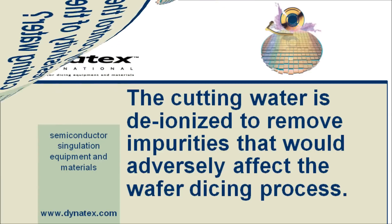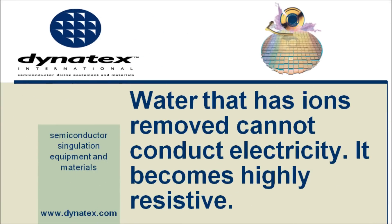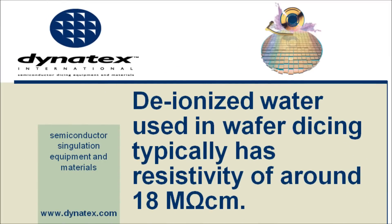Water used in the wafer dicing process is typically deionized to remove impurities commonly found in city water. Water that has been deionized by definition has had its ions removed. Without these ions, water cannot conduct electricity and becomes highly resistive. Deionized water used in wafer dicing is typically around 18 mega ohm centimeters.